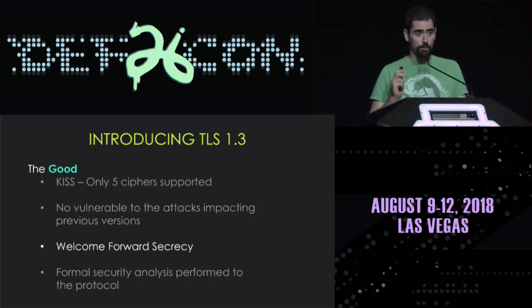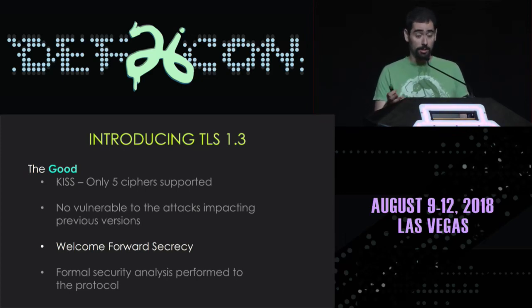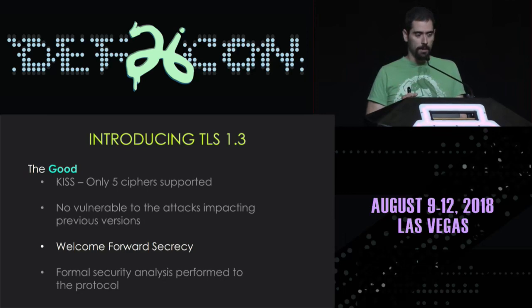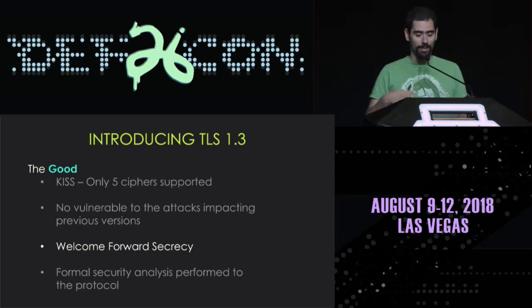Also, TLS 1.3 supports perfect forward secrecy by default — it's not optional like in previous versions of TLS. A quick recap: imagine an attacker is able to store all your secure communications. Perfect forward secrecy ensures that even if the attacker managed to steal the server's private keys, he wouldn't be able to decrypt those communications because ephemeral session keys were used.